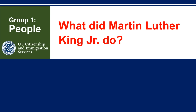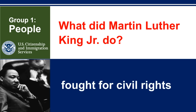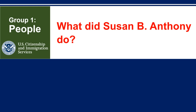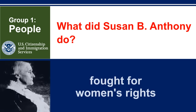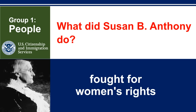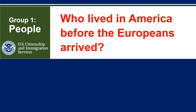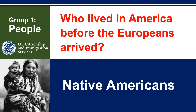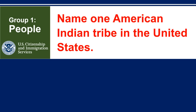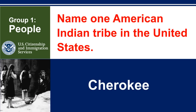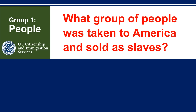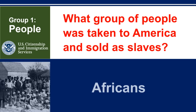What did Martin Luther King, Jr. do? Fought for civil rights. What did Susan B. Anthony do? Fought for women's rights. Who lived in America before the Europeans arrived? Native Americans. Name one American Indian tribe in the United States. Cherokee. What group of people was taken to America and sold as slaves? Africans.